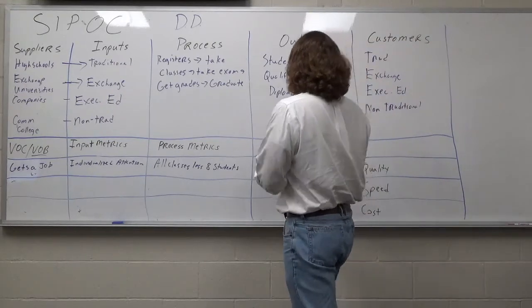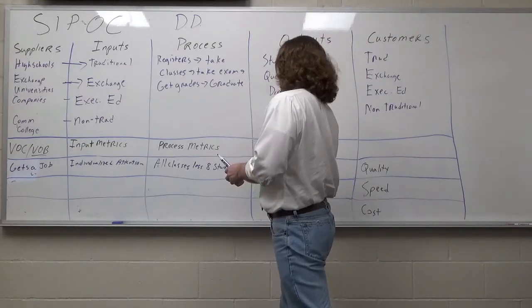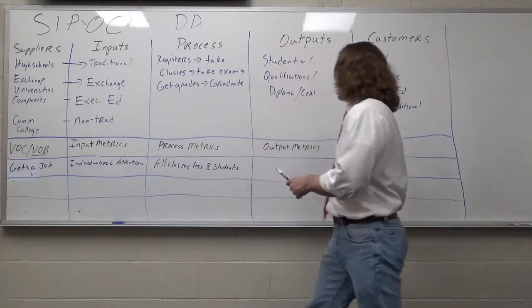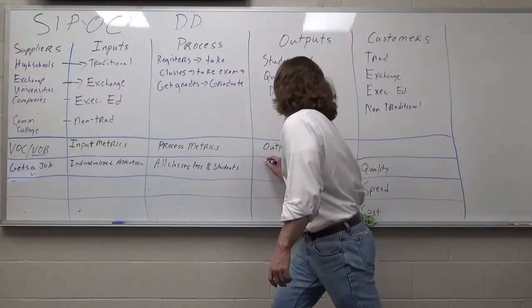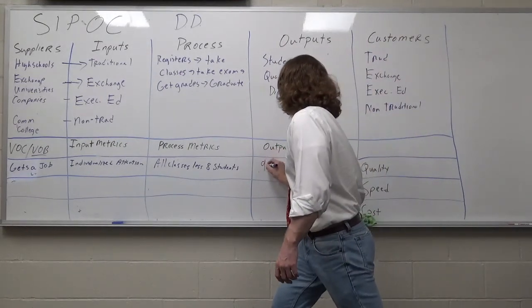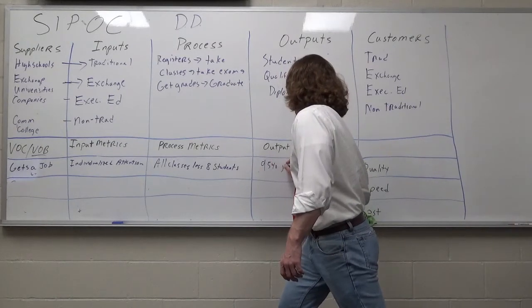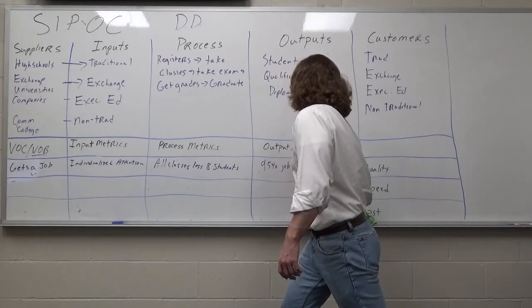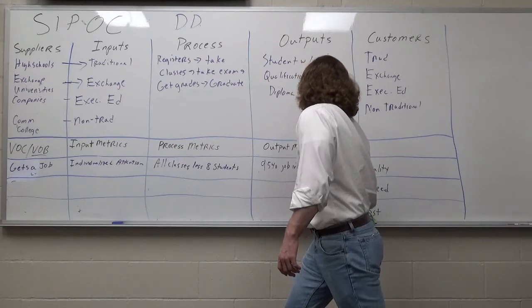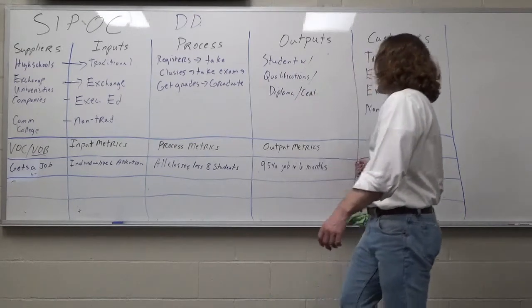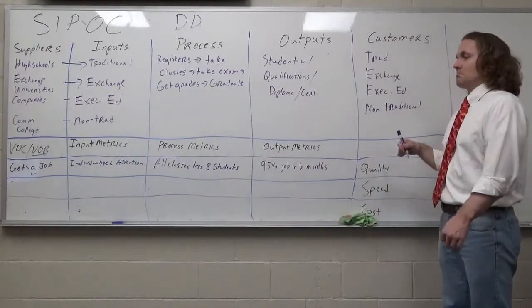The output metric could be something like, maybe not individualized attention, but let's make this easy. 95% get a job in six months. That's an indication of the quality of the education.